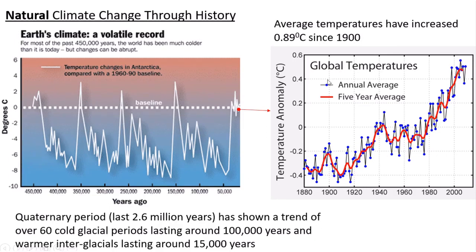Temperatures have increased since 1990 by 0.89 degrees. That doesn't seem like very much, but when you think of the effect that just one degree has on melting ice — where melting and freezing point is zero — going up by just one degree roughly is going to start to create major issues for the locked-up water and ice caps in the Arctic, Greenland and Antarctica.